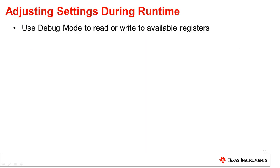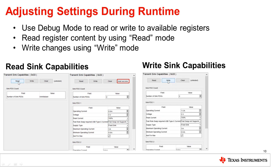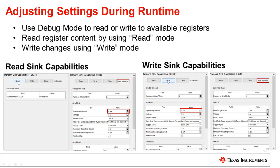Next, I will demonstrate how to use manual debug mode to change configuration settings during runtime. When you click the read button, the TPS6598X device will use I2C to read and list the sink capabilities currently being sent by the device, and the GUI will display read success. Using the write button, I can update the sink capabilities. Here, I have changed the operating current from 900 milliamps to 1.5 amps and pressed write. The GUI should then display write success.